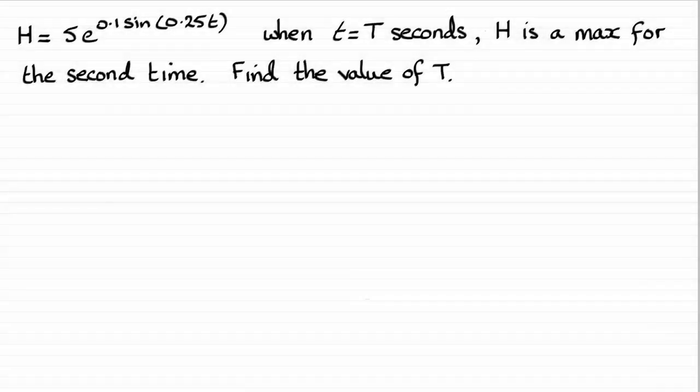Now for this last part of the question, we've got our equation for the height h and we're told that when t equals T seconds, h is a maximum for the second time and we've got to find that value of T.